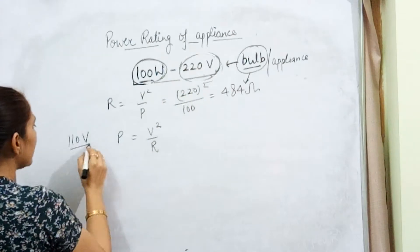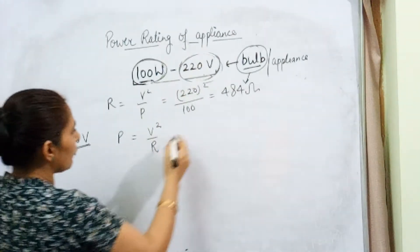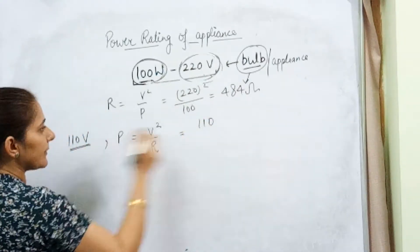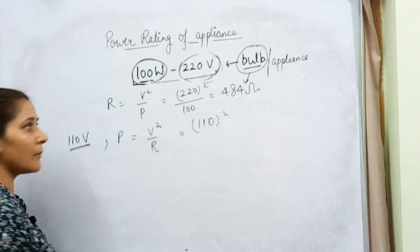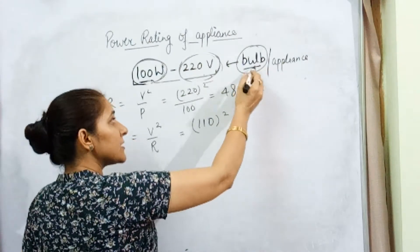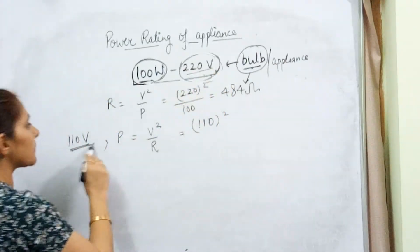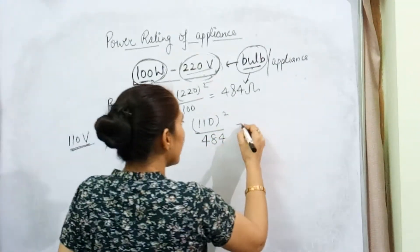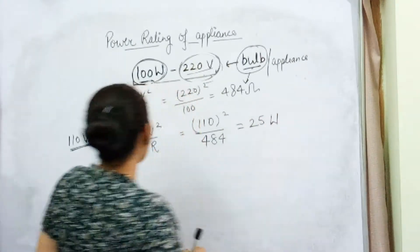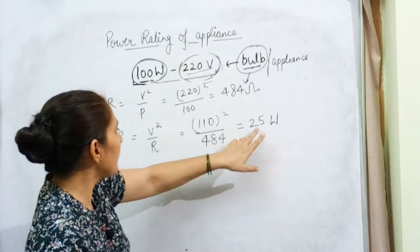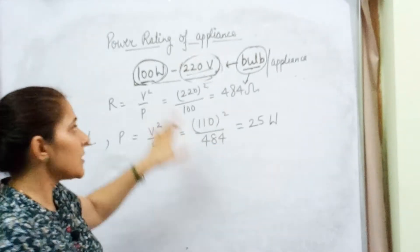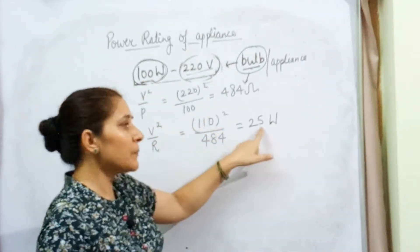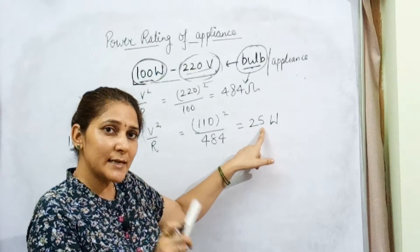In this situation, the bulb is working at 110 volt instead of 220 volt. So we can find out power: P = V²/R = 110² / 484. The resistance of the bulb does not change — it is the same bulb, we have only changed the voltage from 220 to 110. The resistance remains 484 ohm. When you solve it, you get 25 watt. So the power consumed by the bulb is 25 watt when working at 110 volt.